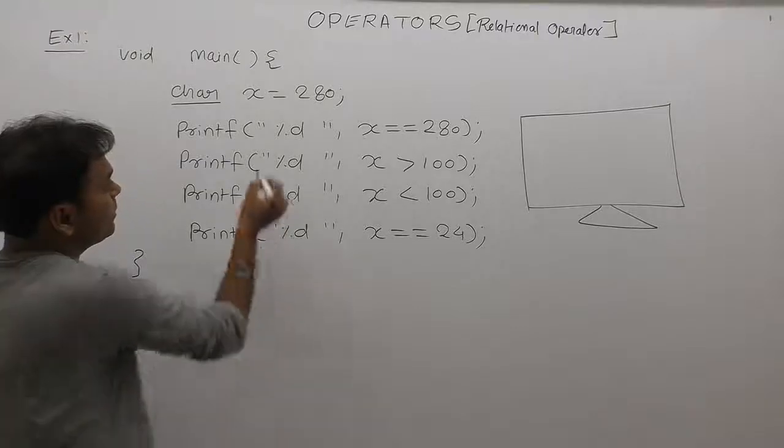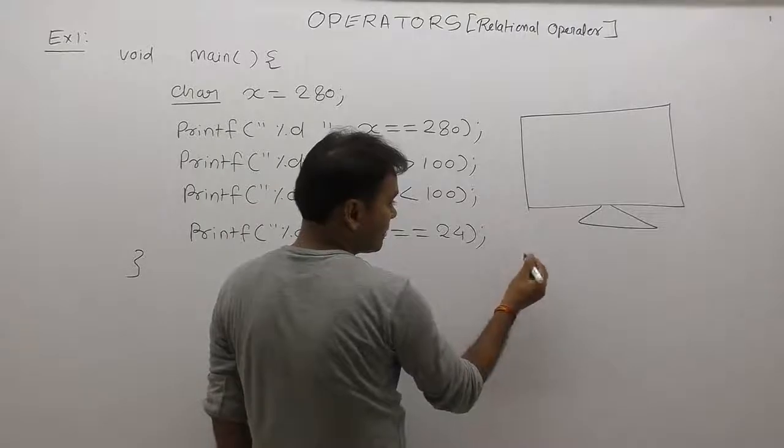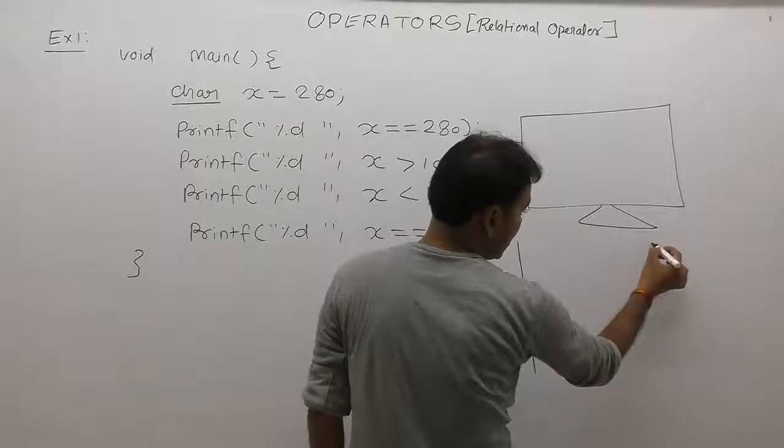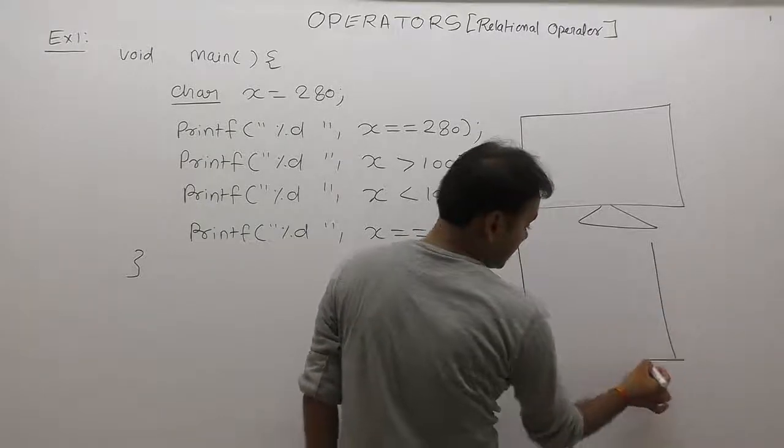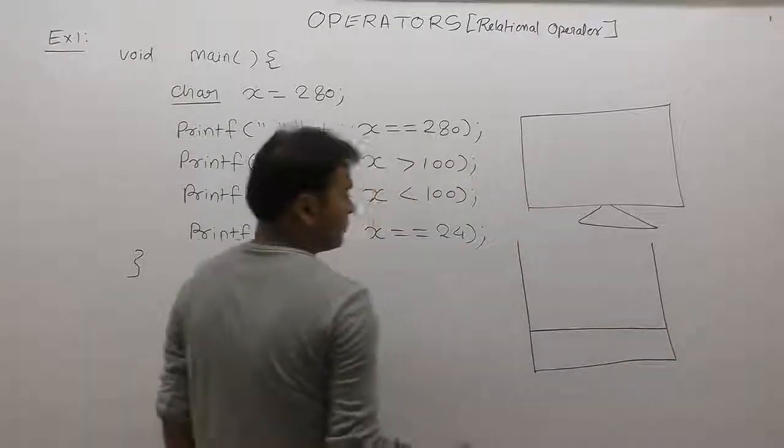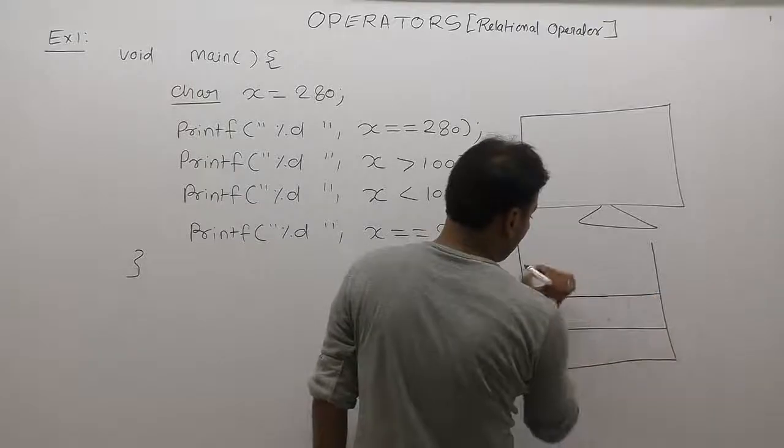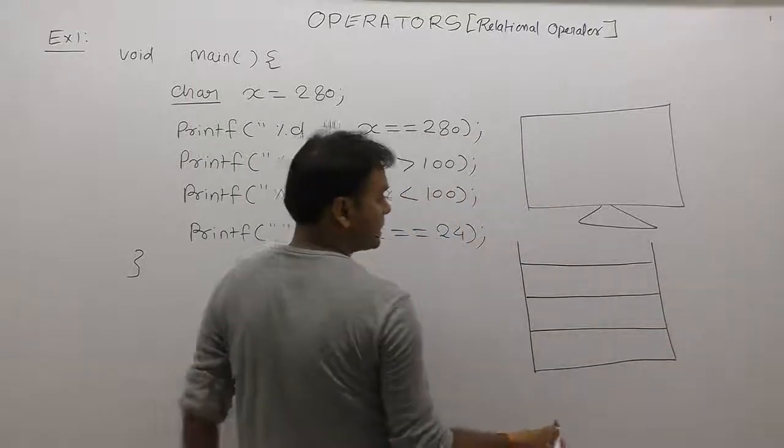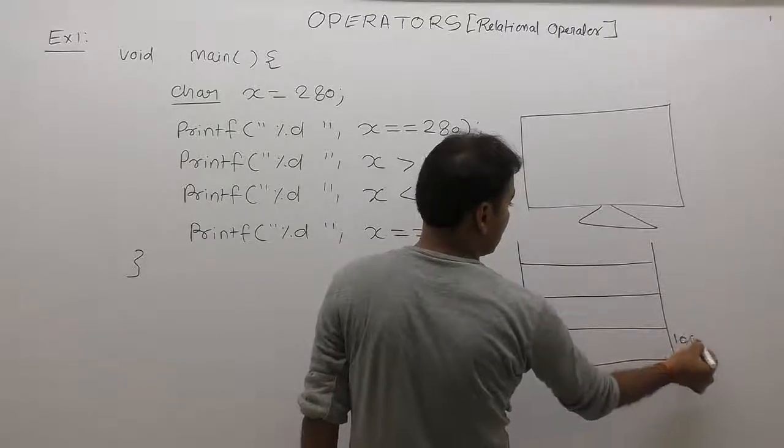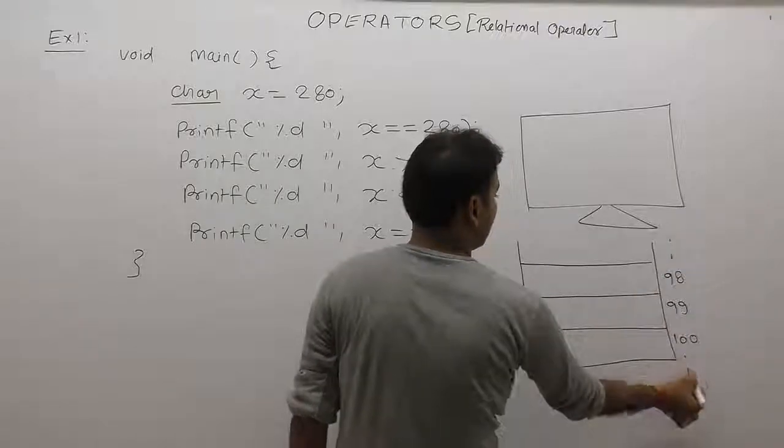First of all, memory allocation for x. Since x is a character type of variable, therefore it will take only 1 byte in stack memory. When the program starts, all local variables are created inside stack memory. Here, we are taking some memory address as 100, 99, 98 and so on.